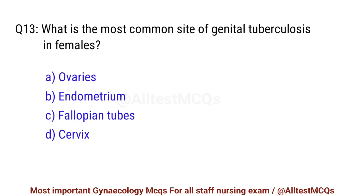Question No. 13. What is the most common ovarian tumour in females? Right option is C. Fallopian tubes.